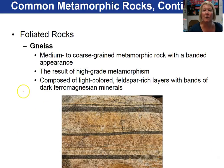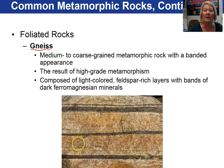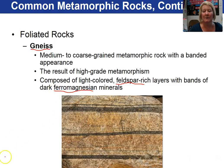The highest grade foliated rock is the gneiss. It is medium to coarse grained. It has the banding appearance — I call it the zebra rock. So you have feldspar-rich layers and ferromagnesian-rich layers.